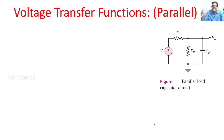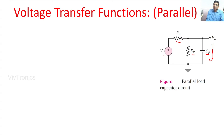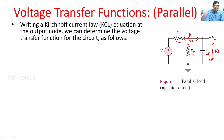Next we derive the voltage transfer function of a parallel load capacitor circuit, which represents the output side of the amplifier. Here RS is the internal output resistance, RP is the load resistor, and CP is the load capacitance — RP and CP are in parallel. The total output voltage is the voltage across CP. Applying KCL at node A, the currents are: (V0 − Vi)/RS + V0/RP + V0·s·CP = 0.